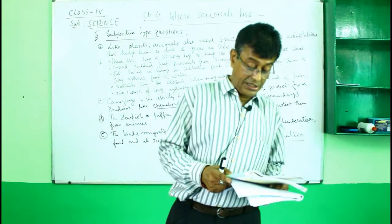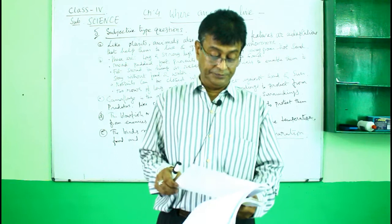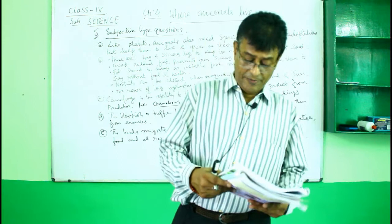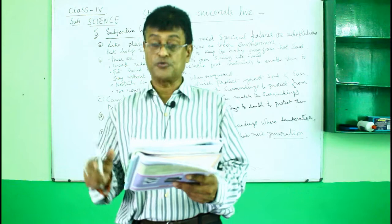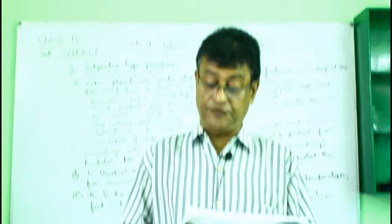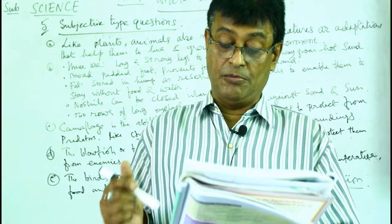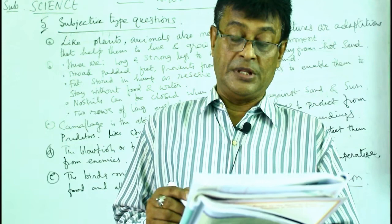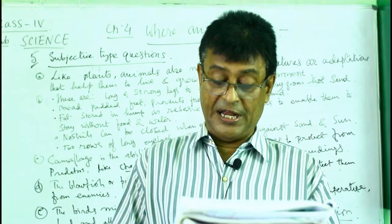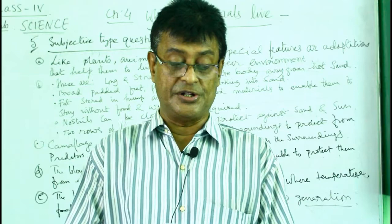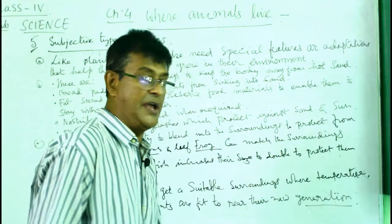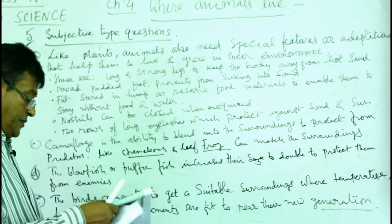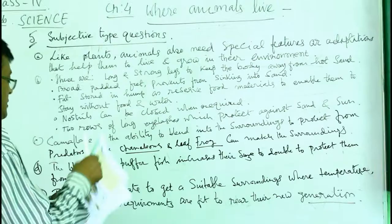For 'Underline the correct word': a) arboreal, b) flamingos, c) turtle, d) dragonflies, e) camouflage, f) streamline. For the match-the-column section: a) spider monkey, b) flying birds, c) boiling hot smelly spray, d) migratory bird, e) hibernation, f) poison.